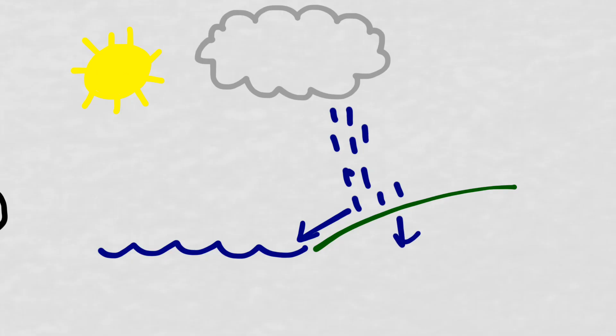Then we have evaporation when the water gets really warm and condensation into a cloud, and then the cycle starts all over again. But we're not using or losing any more water than we started out with.